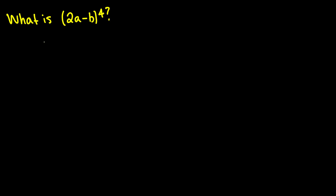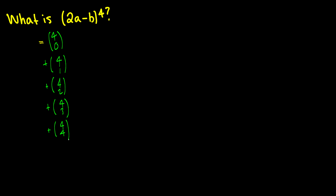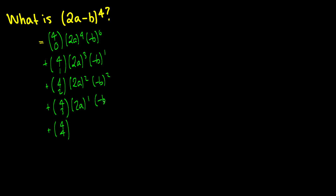I'm going to do this quickly and point out the important things. Our terms are going to be 4 choose 0 all the way up to 4 choose 4. The first term is (2a)^4 times (-b)^0, then (2a)^3 times (-b)^1, then (2a)^2 times (-b)^2, then (2a)^1 times (-b)^3, and (2a)^0 times (-b)^4. I wrote it vertically so you can see the progression — the power for 2a is decreasing and the power for negative b is increasing.